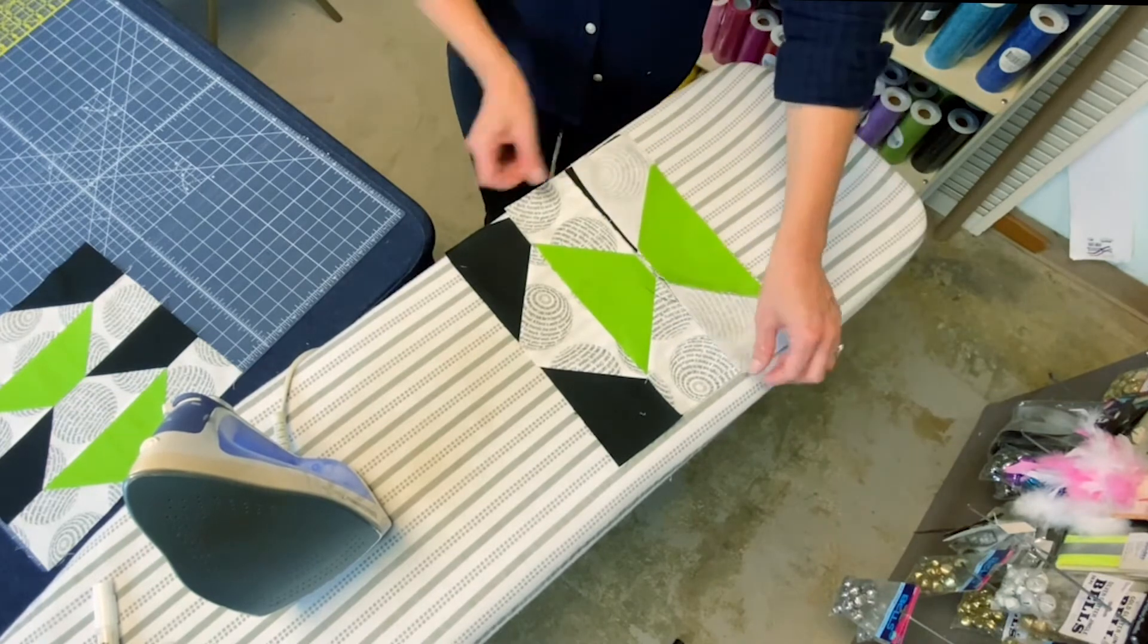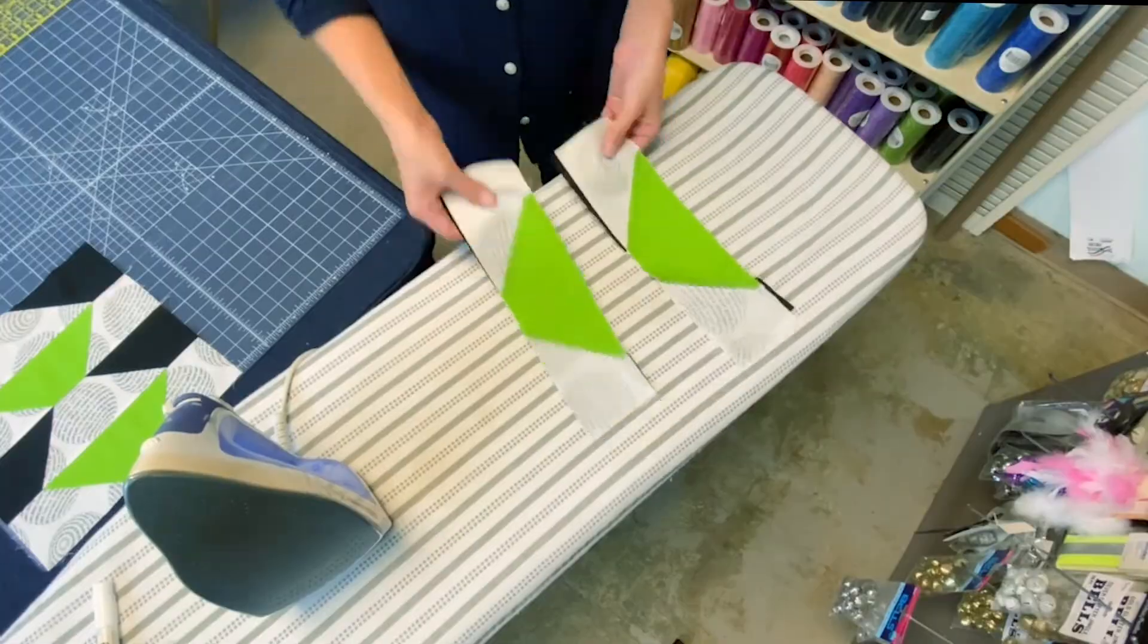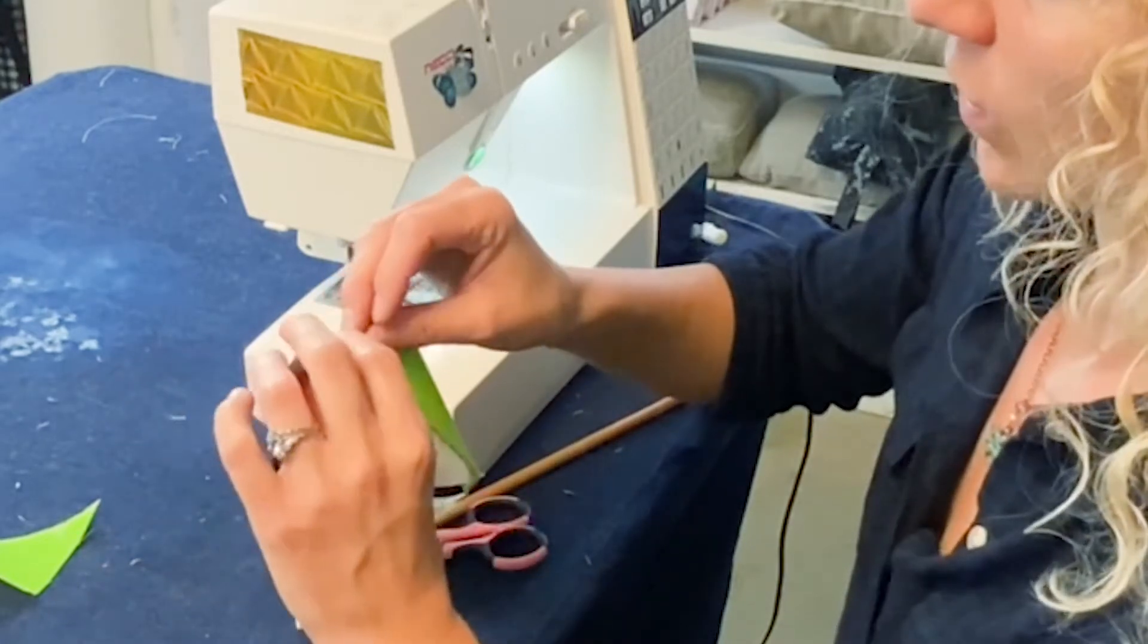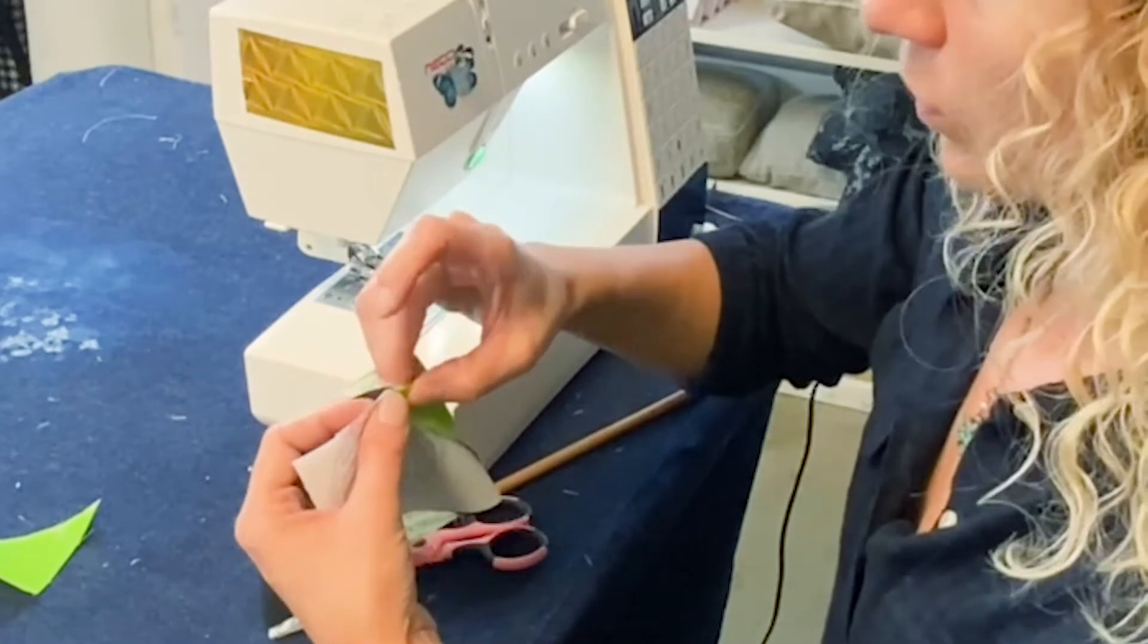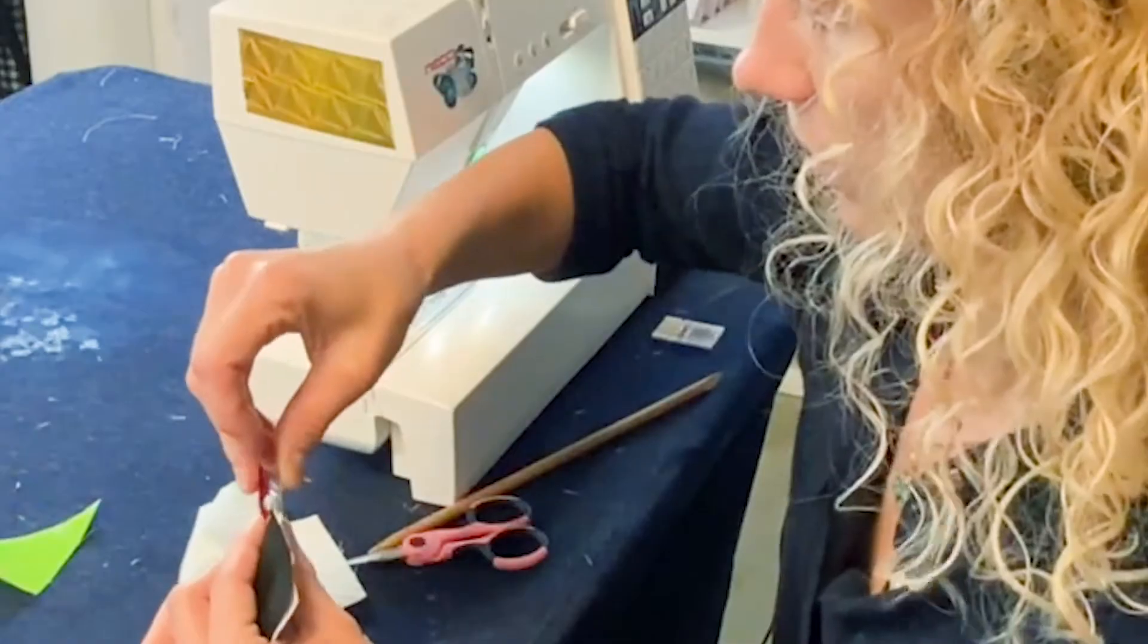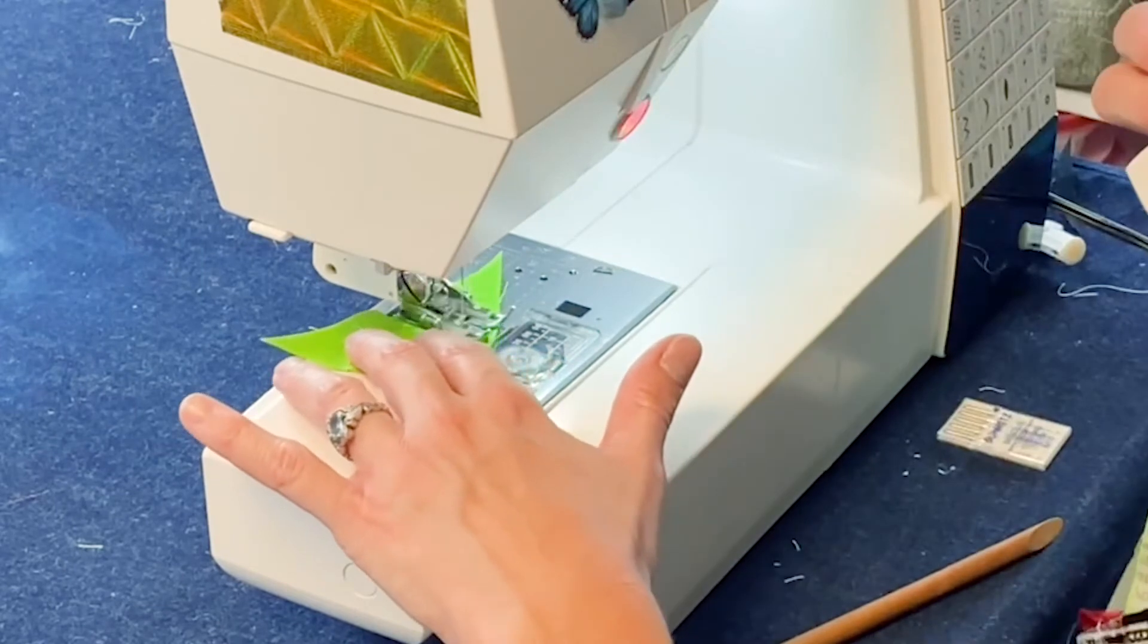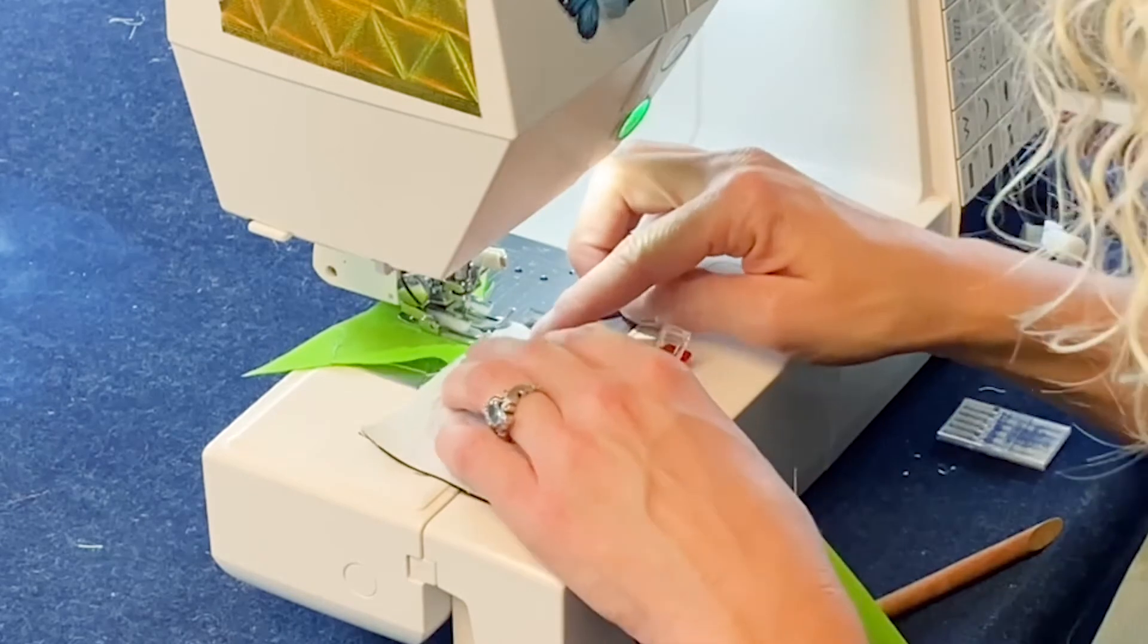And we are going to flip and sew flip and sew. So when I go to sandwich them together I want to make sure that my seam so one seam is going this way and one is going that way and they line up and I'm going to put a clip on it so it stays together. And using a scant quarter inch sew them together.